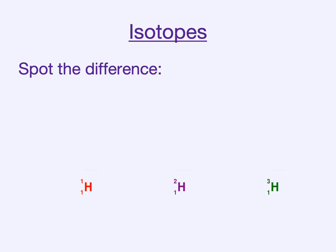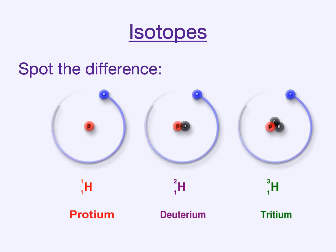Look at the purple one. That one has one proton — obviously, because it's hydrogen — but it has one neutron as well. So the top number, which is the relative atomic mass, is 2. And the one in green has 3. The red one is called protium. That's an isotope of hydrogen. The word isotope means a version, and it's all to do with different numbers of neutrons. Protium doesn't have any neutrons — that's the normal hydrogen that we normally talk about.